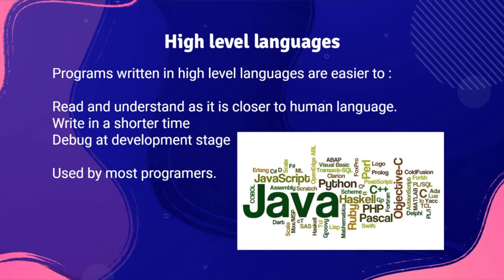High level languages are easier to read and understand as they are closer to human language. They can be written in a shorter time and debugged at the development stage. Due to these advantages, they are used by most programmers. Examples of common high level languages include Java, Python, C++, etc., as shown in the image.